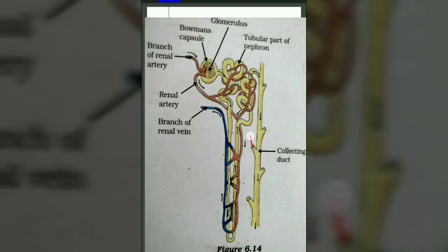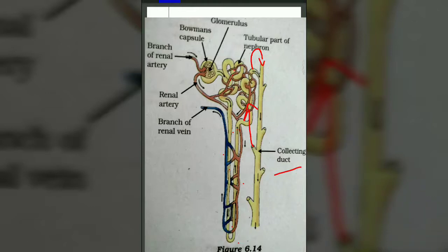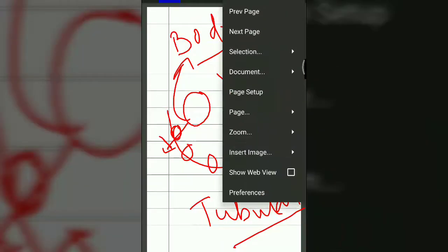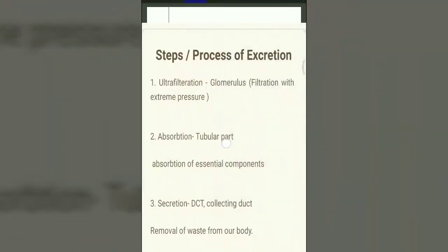When blood moves through the hairpin loop and DCT, any remaining essential components are absorbed back to the body. What is left is nothing but waste. That waste, through the DCT, is secreted into the collecting duct. So the three steps of the process of excretion accomplished through the nephron are: ultrafiltration, absorption, and secretion. The third step — secretion — collects the waste that is not required by the body into the collecting duct.